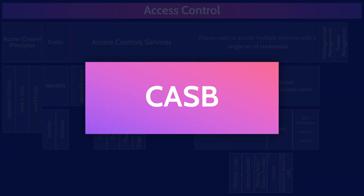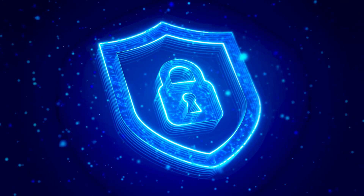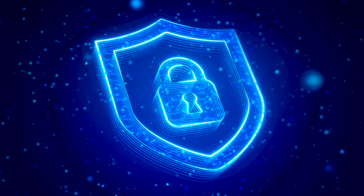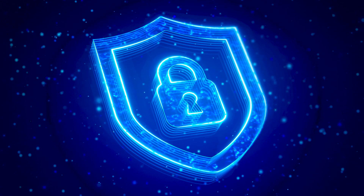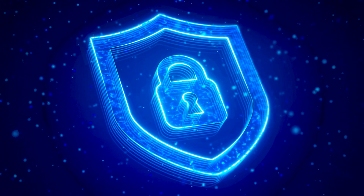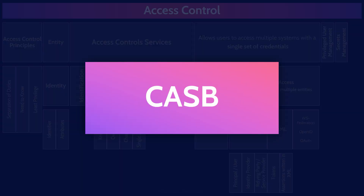A Cloud Access Security Broker, or CASB, is a security solution that acts as a proxy sitting between cloud consumers and cloud service providers to enforce security policies and protect data. CASBs provide visibility into cloud service usage, allowing organizations to monitor user activity, enforce data security policies, and detect threats. CASBs can help with data loss prevention, encryption, access control, and compliance — ensuring cloud service usage across an organization is appropriate and aligns with corporate and regulatory requirements.